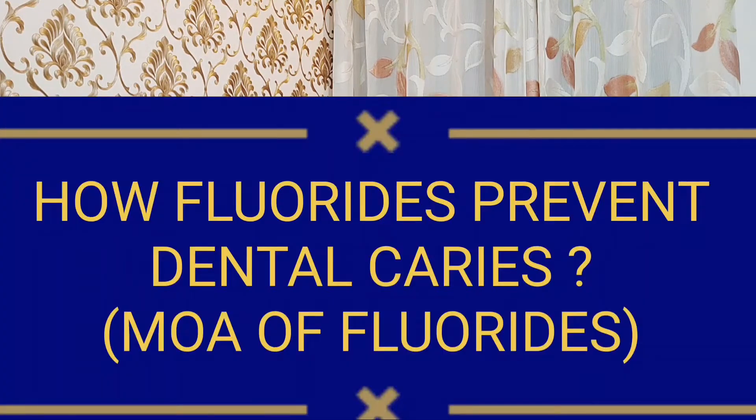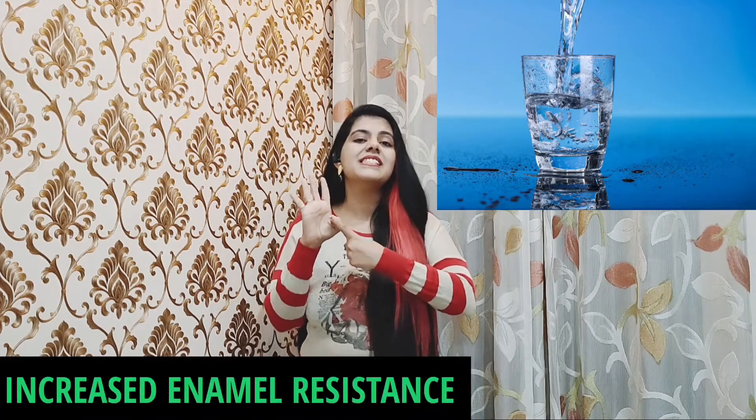Today we are going to talk about the most important topic: the mechanism of action of fluoride, or how fluoride prevents dental caries. The mechanism by which fluoride increases caries resistance may arise from both topical and systemic application of fluoride. There are many mechanisms, and we will cover them under five subheadings. Beginning with the first subheading: increased enamel resistance.